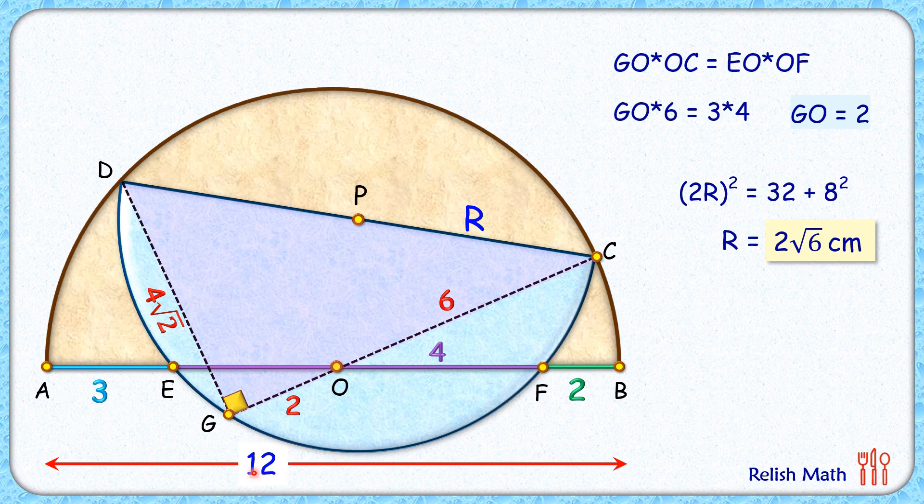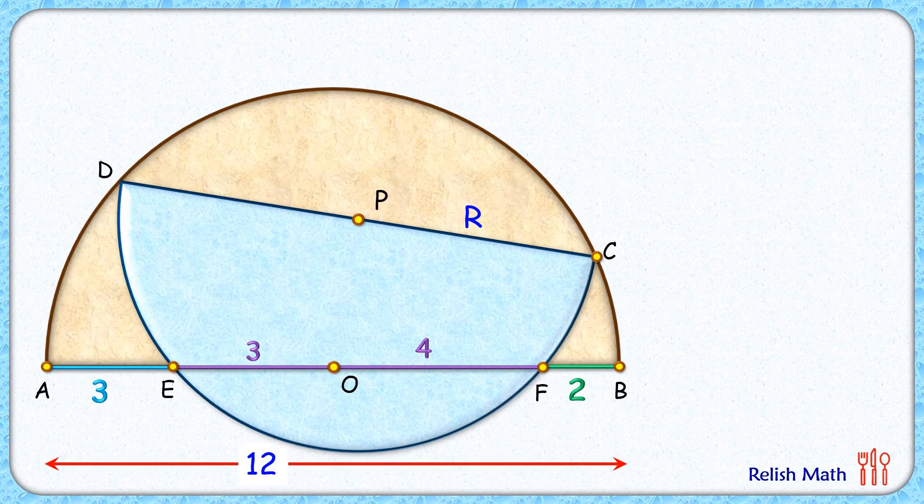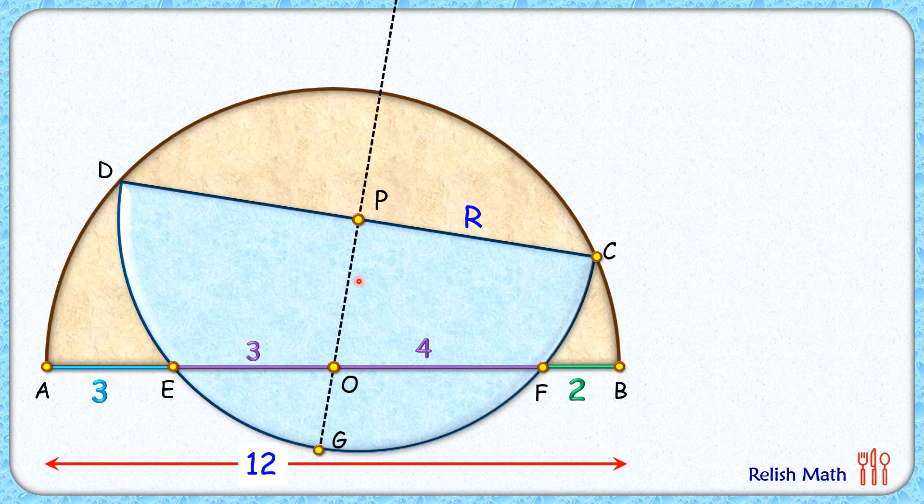Now let's have a look at the second solution. For this solution, we'll use the same power of point theorem but twice. Once we'll apply it in blue circle and then in brown circle. So let's draw a line passing through point P and O. Let's call the length PO as X cm.